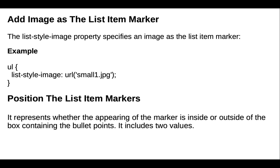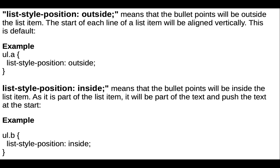The position property represents whether the placement of the marker is inside or outside of the box containing the bullet points. It includes two values. Using list-style-position with value 'outside' means the bullet points will be outside the list item, and each line of a list item will be aligned vertically — this is the default. Using value 'inside' means the bullet point will be inside the list item, as part of the text, and will push the text at the start.